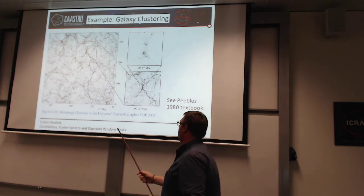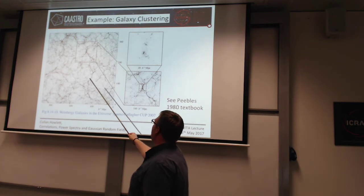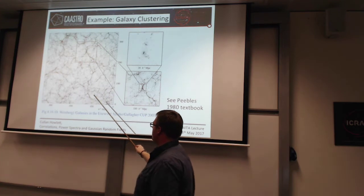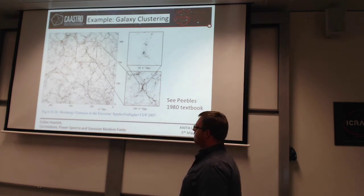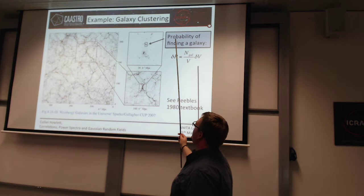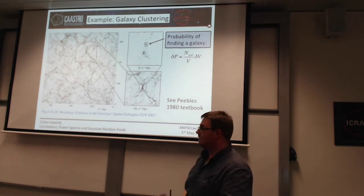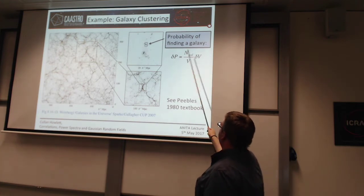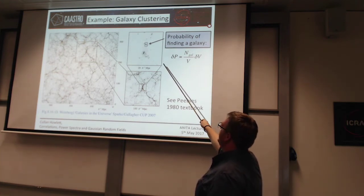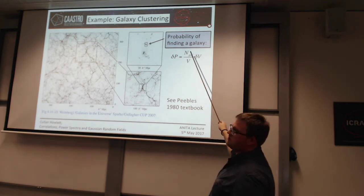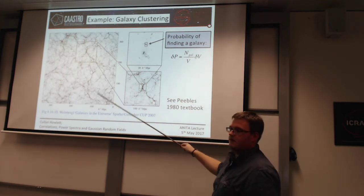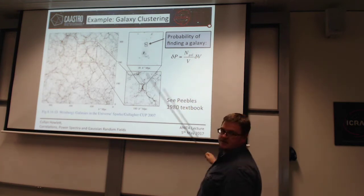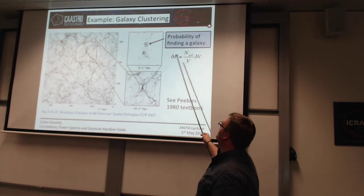Here I've got a galaxy field with all these galaxies composed in the large scale structure. I want to say, what's the probability of finding a galaxy here in this tiny infinitesimal cubic volume? The probability of finding a galaxy in this tiny volume is just the total number of galaxies in the whole volume divided by the volume, times this tiny volume — so it's just the number density of galaxies multiplied by this tiny volume.